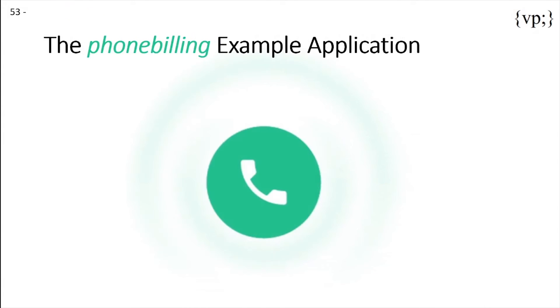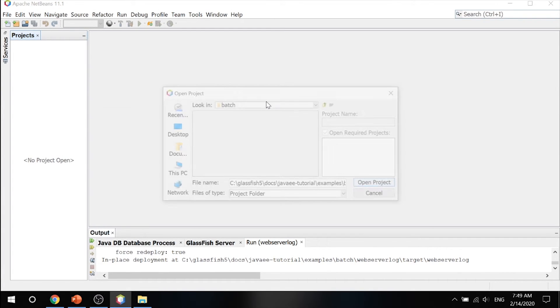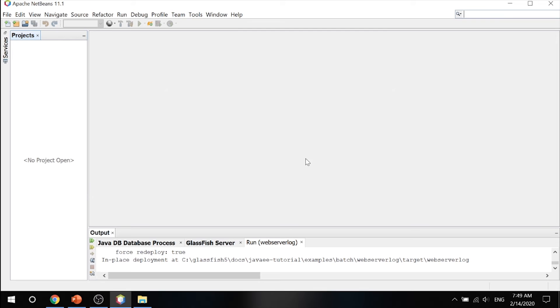Now let's take a look into our phone billing example application. Once again in our NetBeans, go ahead and open project and click phone billing. This application demonstrates how to use the batch framework in Java EE to implement a phone billing system. This example application processes a log file of phone calls and creates a bill for each customer.